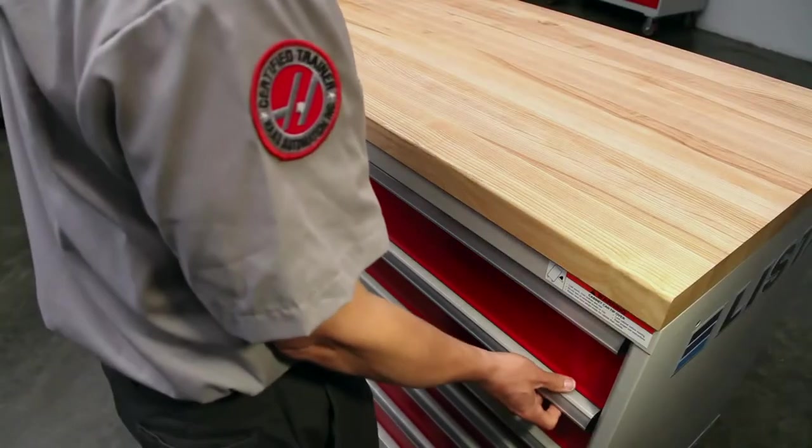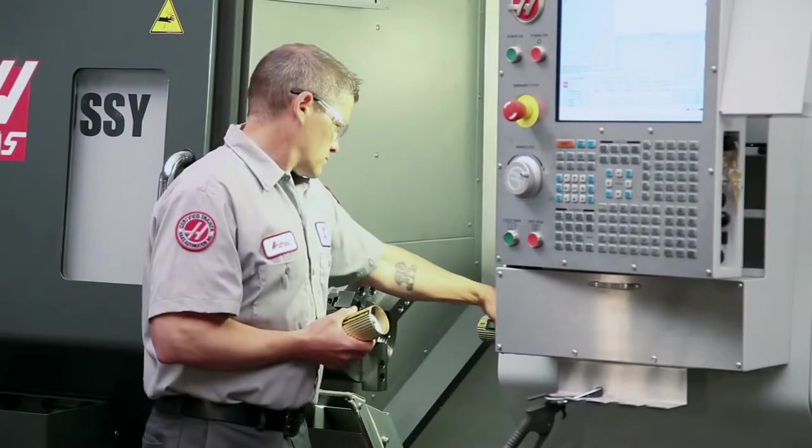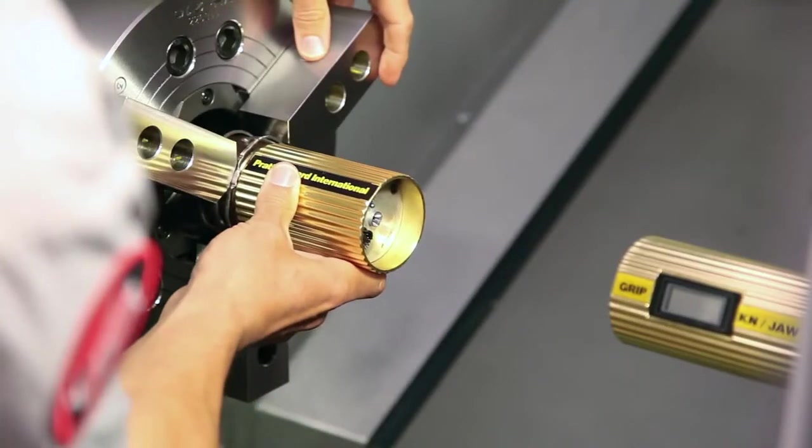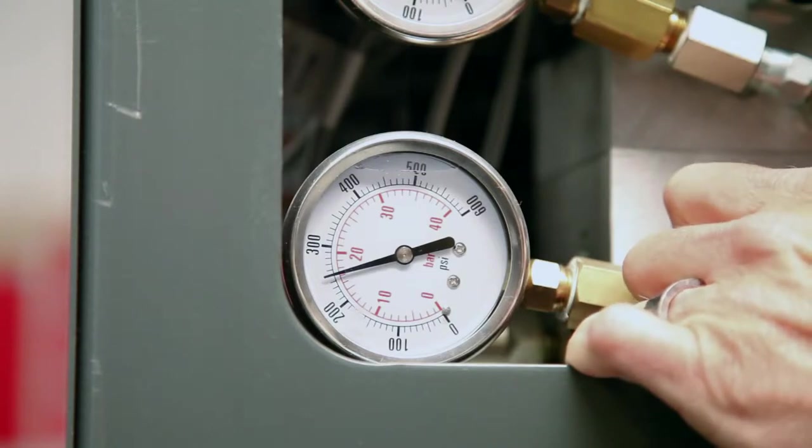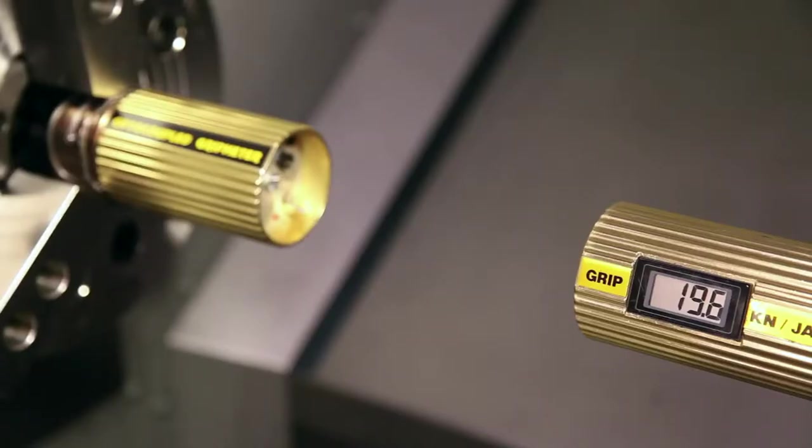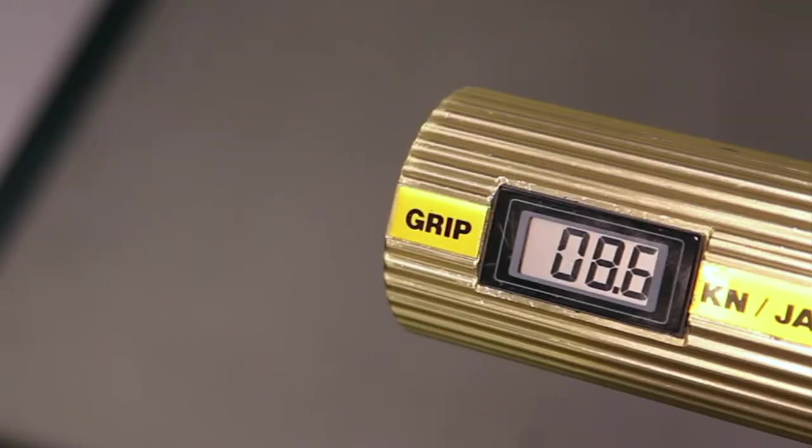To demonstrate the loss of gripping force, we will use this electronic gauge which displays how much force each jaw is exerting against the workpiece. With our chuck pressure set at 250 psi and the chuck stationary, each jaw is pushing with 19.6 kilonewtons of force or 13,000 pounds of total force. With the chuck spinning at 3000 rpm, you can see that the clamping force is reduced by more than half.